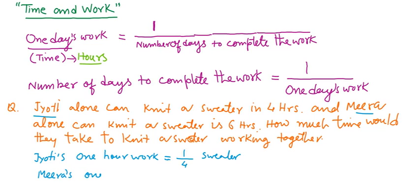Mira will knit a sweater in six hours. Mira will knit a sweater in one hour will equal to 1 by 6 part of the sweater.